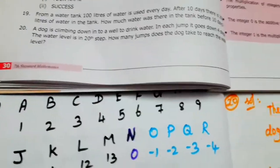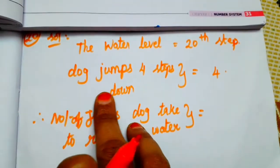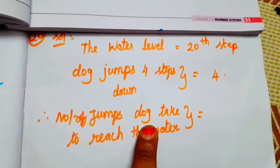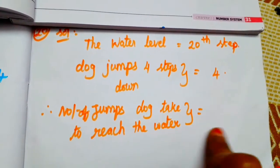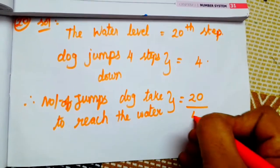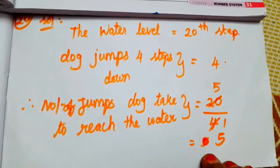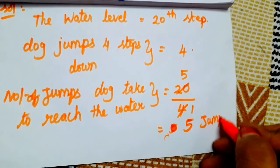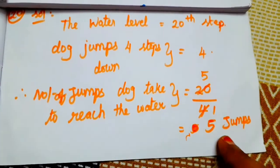The water level is equal to 22 steps. The dog jumps 4 steps down each time. So: 1 four is 4, and 5 fours are 20. If the dog makes 5 jumps, 5 jumps equals the water level. So the answer is 5 jumps.